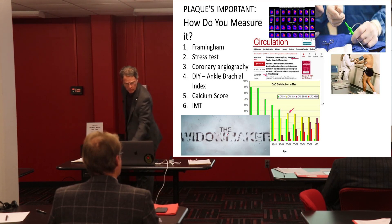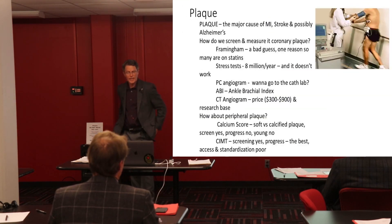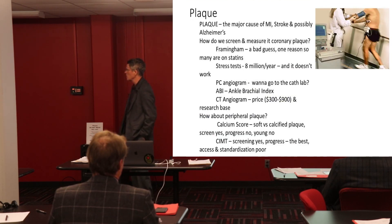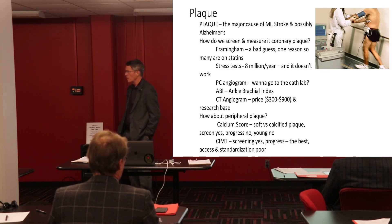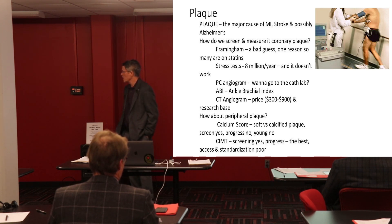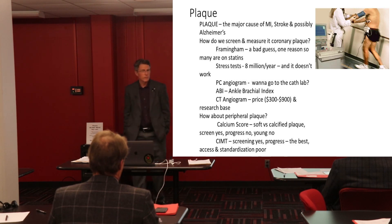Just a quick summary: Framingham is a guess, and a bad one. Stress tests — we do 8 million a year and it really doesn't work for what we use it for. Percutaneous angiogram means the cath lab. ABI is the ankle brachial index — you really have to know what you've got already, and it doesn't tell you that much new.